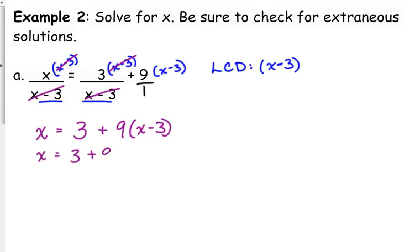We need to distribute the 9, 9x minus 27. We have variables on both sides, so we need to fix that. x minus 9x is negative 8x, 3 minus 27 is negative 24. Then we divide by negative 8, and we get that x is equal to 3.